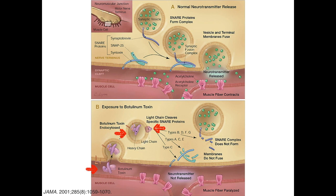The light chain cleaves SNARE proteins by proteolysis. The two clinically used types, A and B, cleave SNAP25 and synaptobrevin, respectively. The fusion of vesicles to the plasma membrane is blocked and acetylcholine release is inhibited. At the neuromuscular junction, this causes paralysis and possibly death.